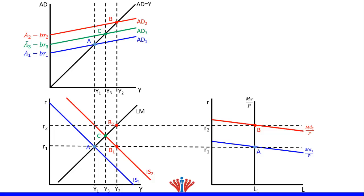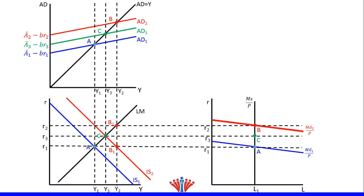This will result in lower output at Y3. From the IS-LM model, we will draw a dotted horizontal line crossing point C to reflect the new equilibrium real interest rate R3 in both the IS-LM model and money market. The intersection between R3 and the money supply curve in the money market will be the new equilibrium point, labeled as point C. From the goods market, the aggregate demand curve shifted downward resulting in lower output from Y2 to Y3, which will result in a decline in money demand based on the transaction motive. Consequently, money demand curve will shift downward crossing point C.